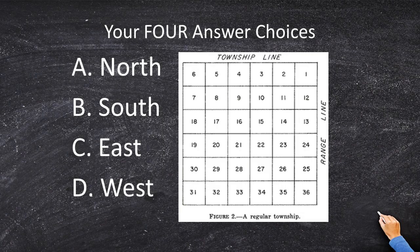In figure two, you're looking at a normal township. We begin at section number one on the northeast corner and we end at section 36 on the southeast corner. The question is: if we have more land or less land than a typical township, where should the excess or deficiency be placed? Since this is a select-all question, you could select one, two, three, or four of the answers.